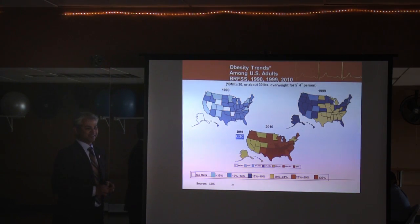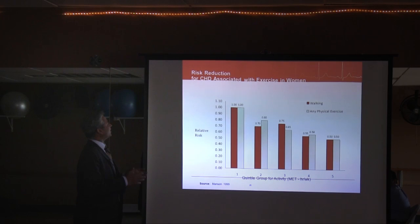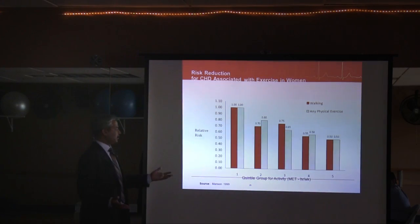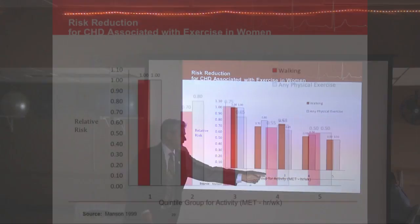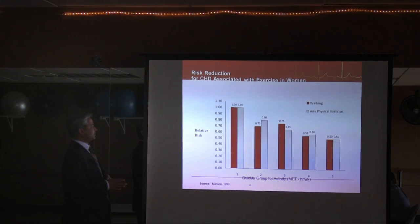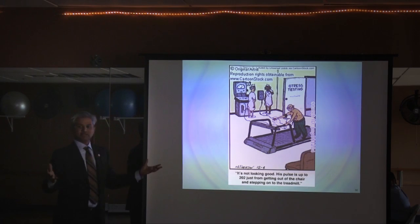How about exercise? If you increase your MET — metabolic equivalent, a measure of how much exercise you're doing — your risk of heart disease steadily goes down. The more you exercise, the lower your prevalence of heart disease. We have a serious problem today: many people barely move enough to be physically active.